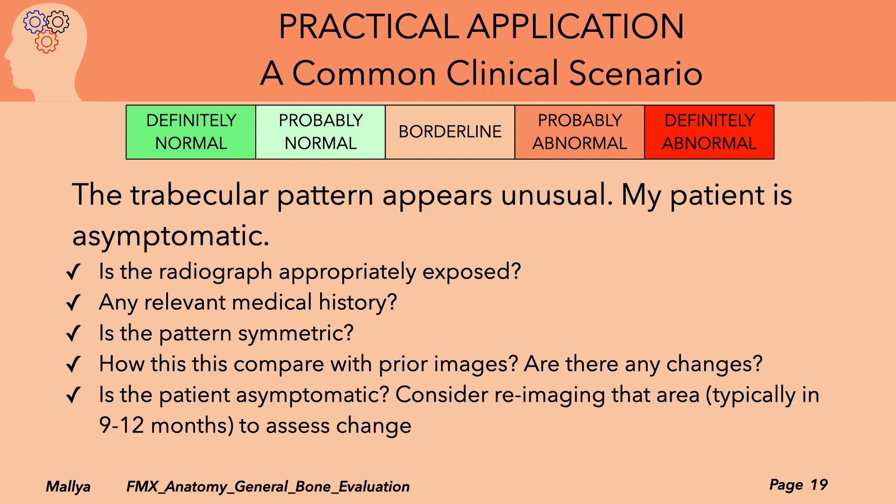Next, review the patient's medical history. Are there any diseases that affect bone metabolism? Is the patient taking any medications that might change the trabecular pattern? Examine the region again and determine if the pattern is symmetric — a symmetric pattern is more likely to be normal than disease. If it is a patient of record, compare the current image with prior images. If the appearance of the trabecular pattern is relatively stable, it is more likely to be an anatomic variation rather than disease.